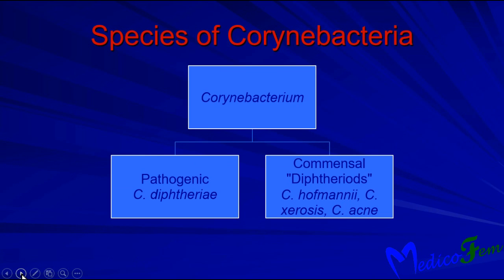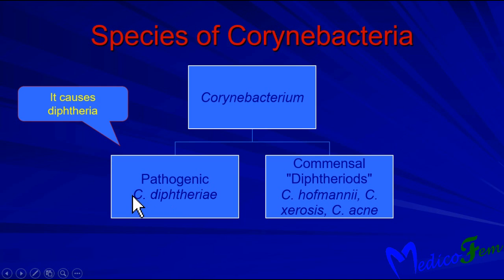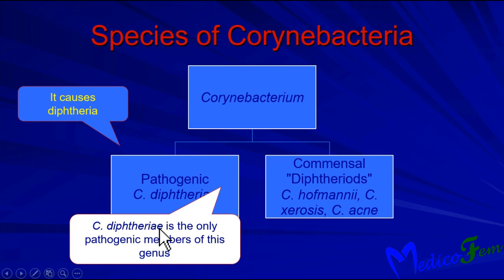Species of Corynebacterium include pathogenic and non-pathogenic types. The pathogenic species is Corynebacterium diphtheriae, and all non-pathogenic species are commonly called diphtheroids. Corynebacterium diphtheriae is the only pathogenic member of this genus; all others are non-pathogenic to humans.